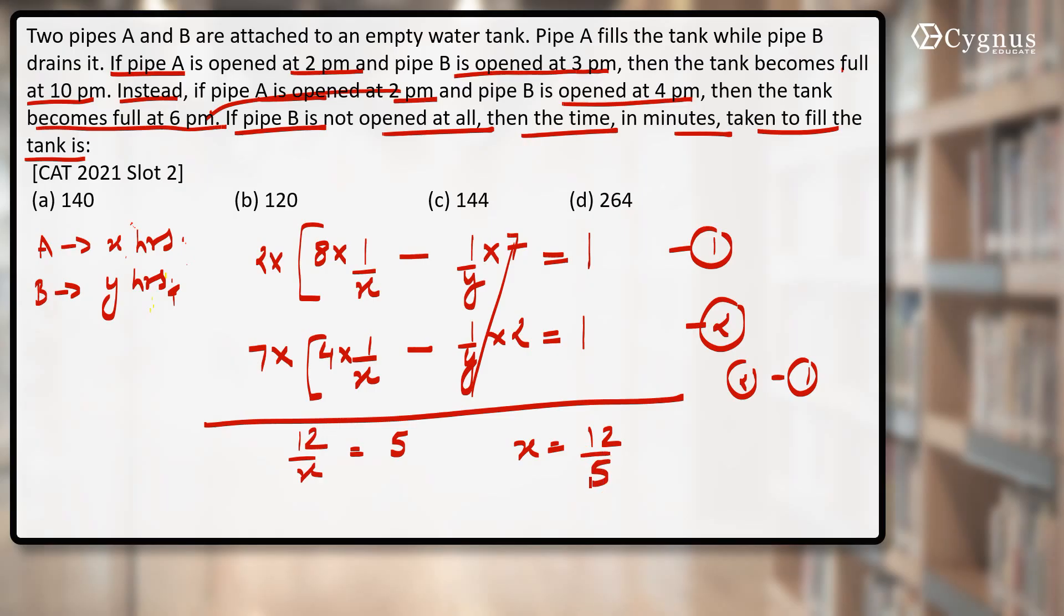x comes out to be 12/5 hours. You want your answer in terms of minutes, so I should multiply this by 60. When you multiply it by 60, this will cancel out 12 times, and 12 × 12 gives you 144. So the correct answer should be 144 minutes.